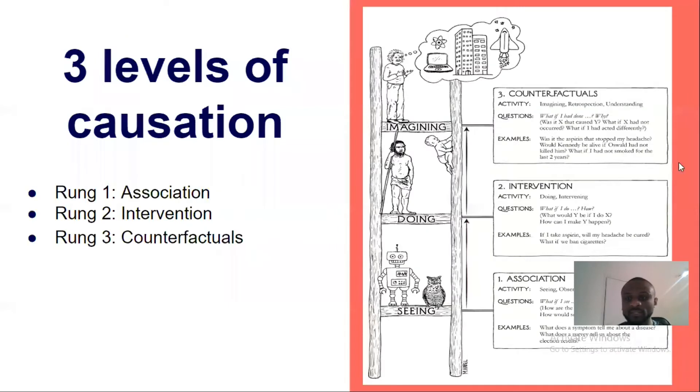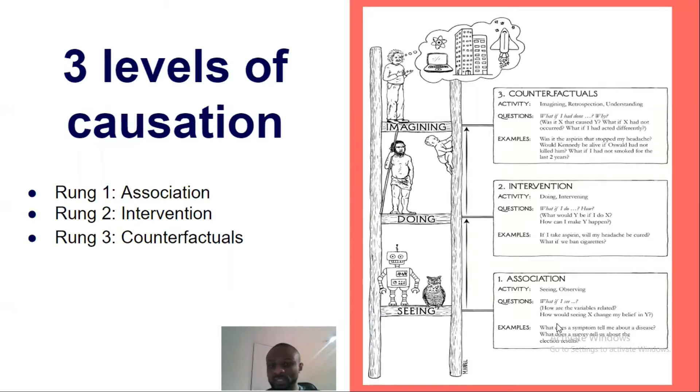And then one good thing about it is this diagram was used to sort of explain what these three levels are. So what he's saying is association. So basically looking at correlation. Example: the cock crow and dawn. You correlate, there's a correlation between the cock crow and dawn. So you're looking at that association.